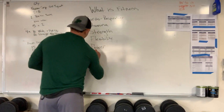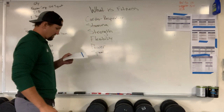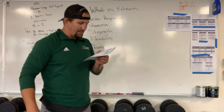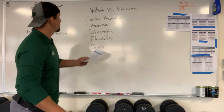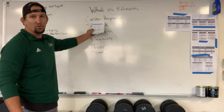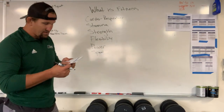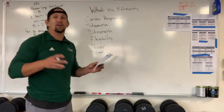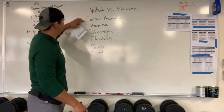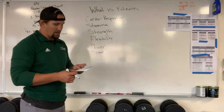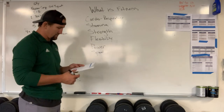Number six: speed — the ability to minimize the time cycle of a repeated movement. Cardiorespiratory endurance is more like cross country running, while speed is the hundred meter sprint — same concept, just different. Strength to power is the same kind of relationship as cardiorespiratory to speed.